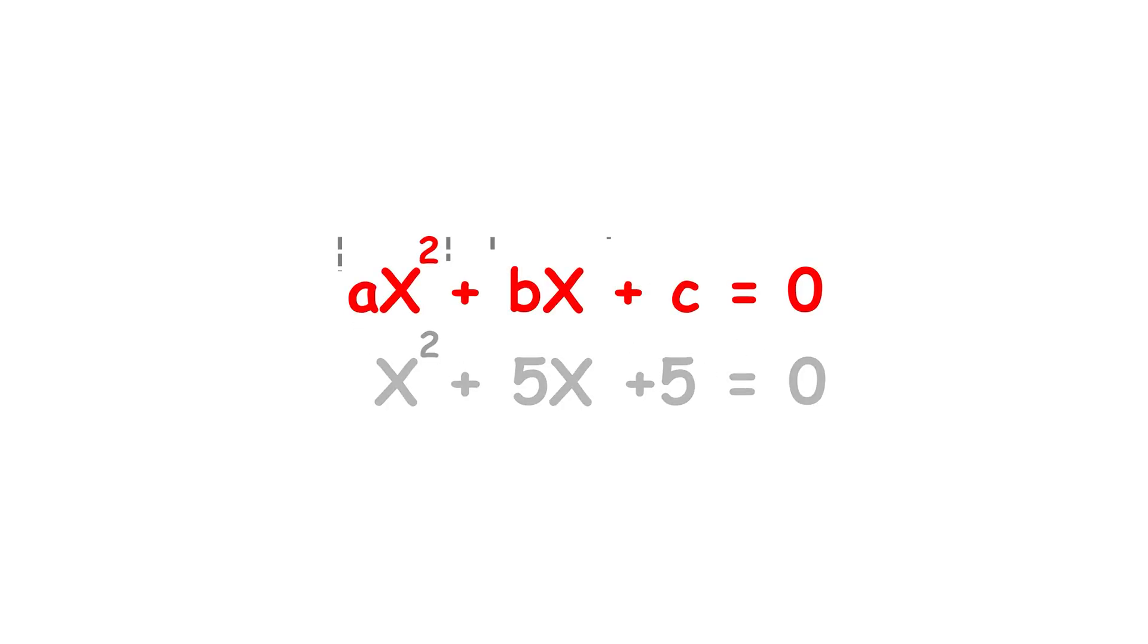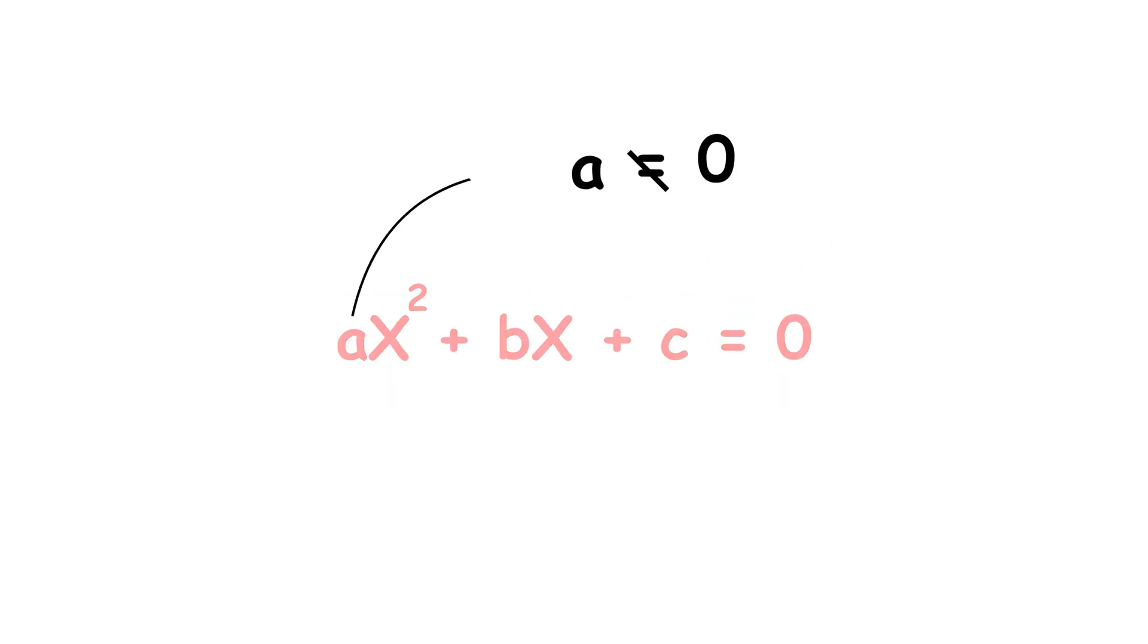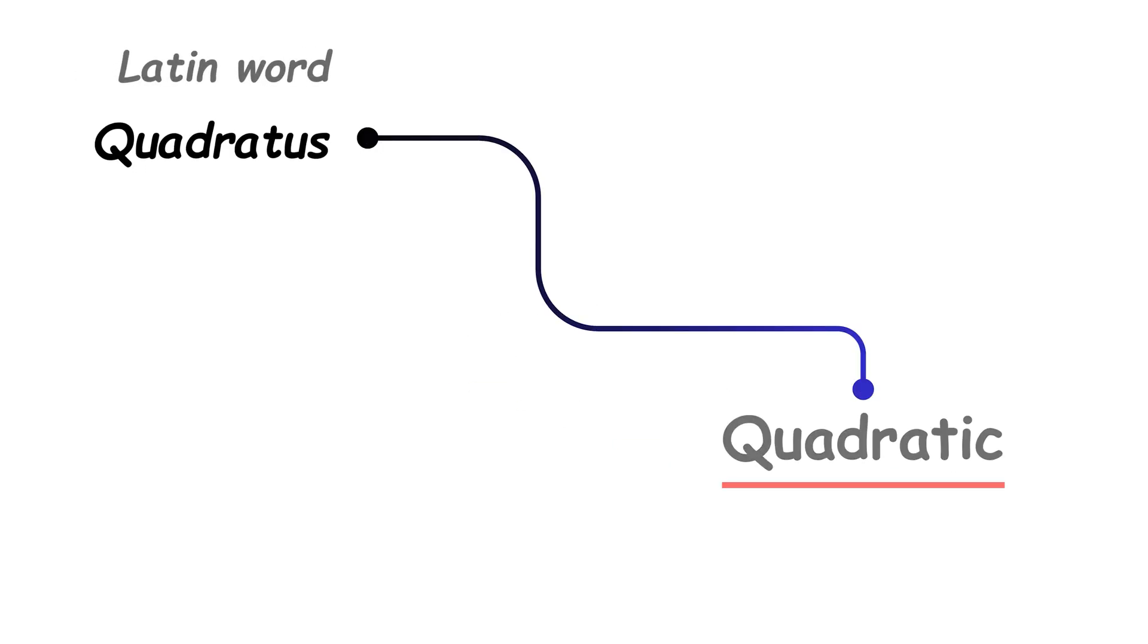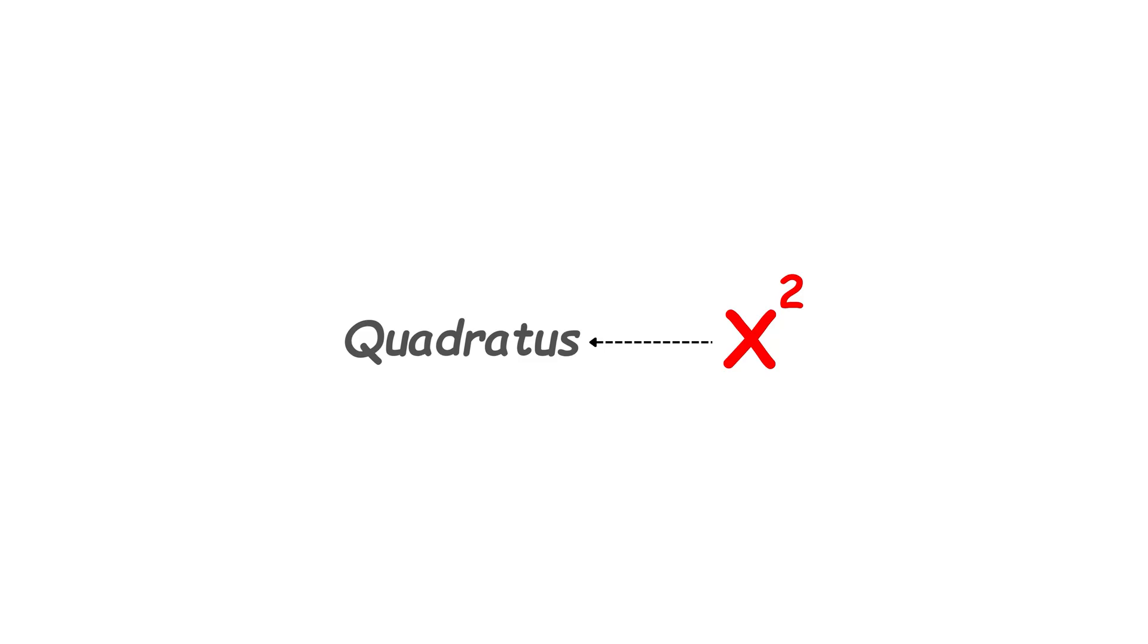ax squared plus bx plus c equals 0, assuming that the value a isn't equal to 0. The word quadratic comes from the Latin quadratus, meaning made square, in reference to the x squared.